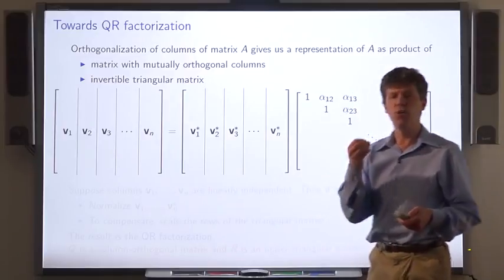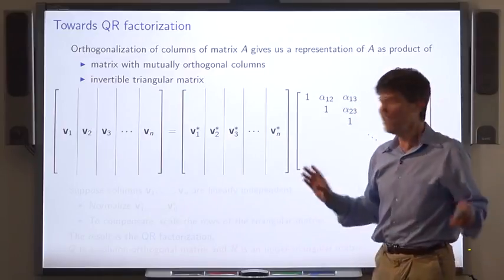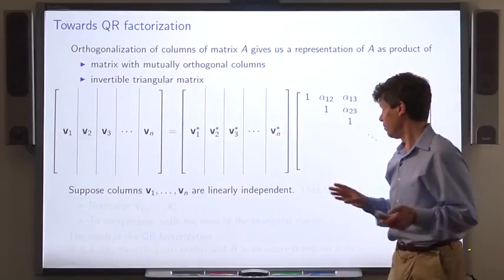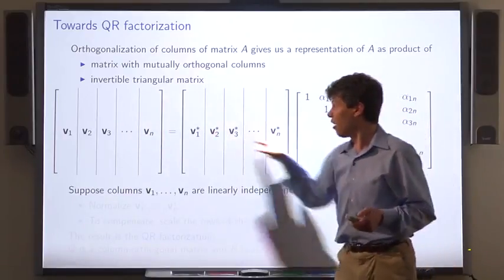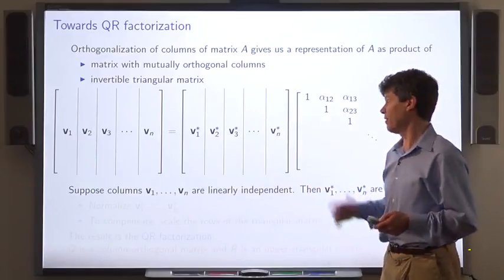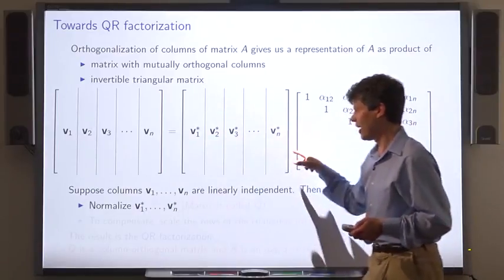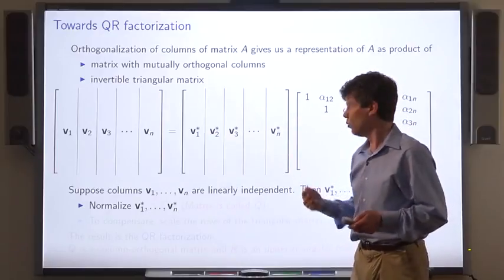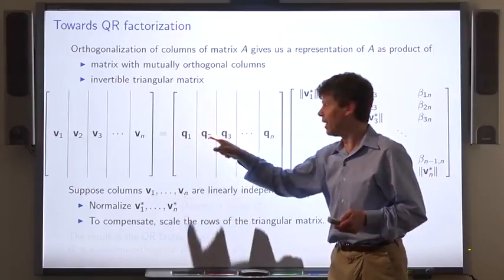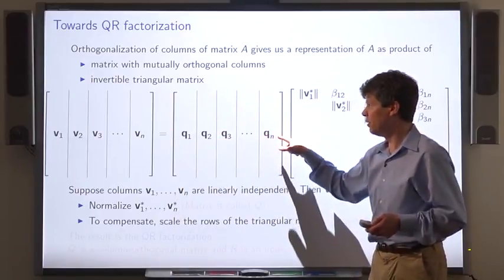Now these starred vectors are mutually orthogonal, but they're not orthonormal. So let's assume that the input vectors are linearly independent. In that case, the starred vectors are all non-zero. So we can normalize them. We'll normalize these vectors, replacing them with their normalized versions. And we'll call the normalized versions q1 through qn.